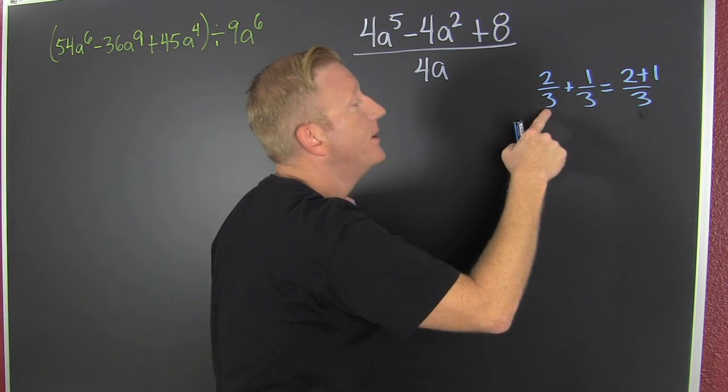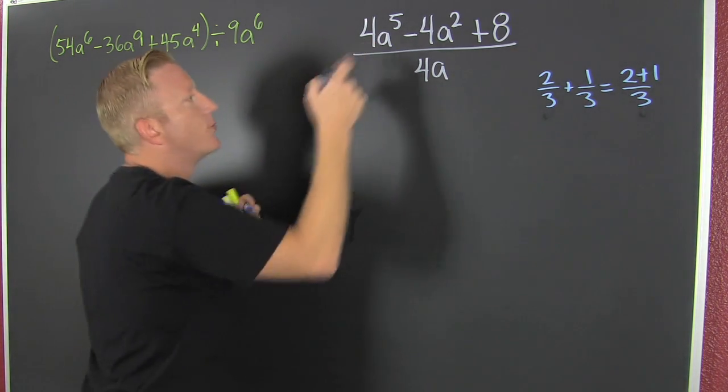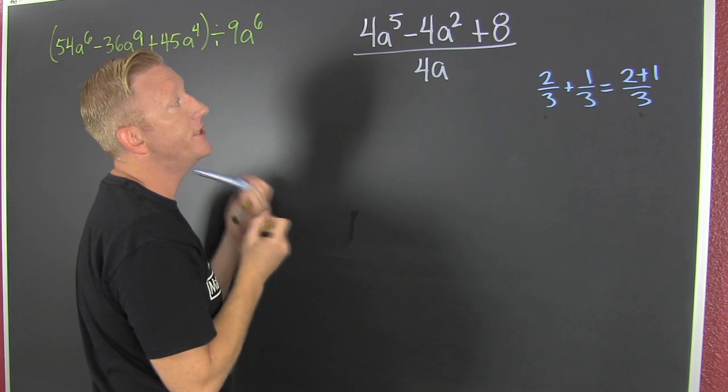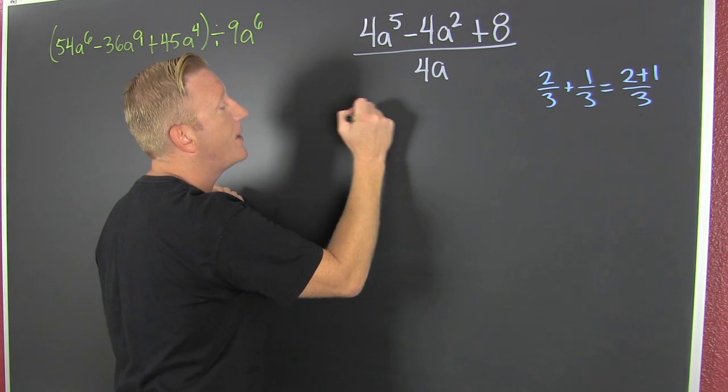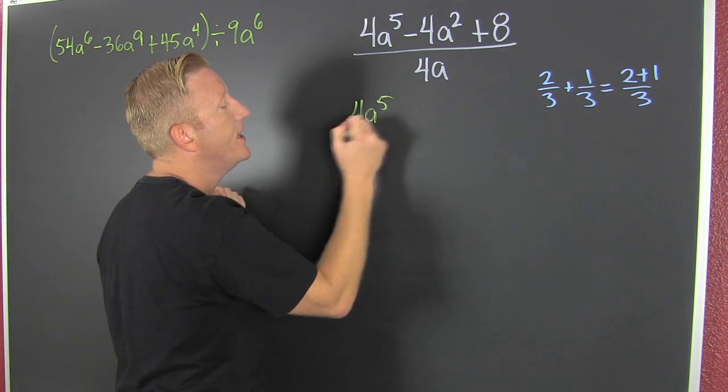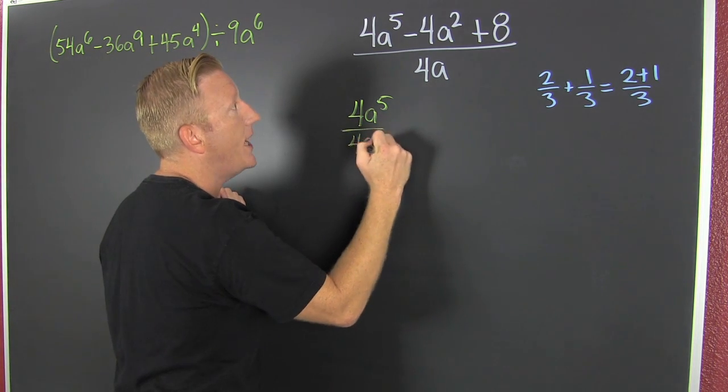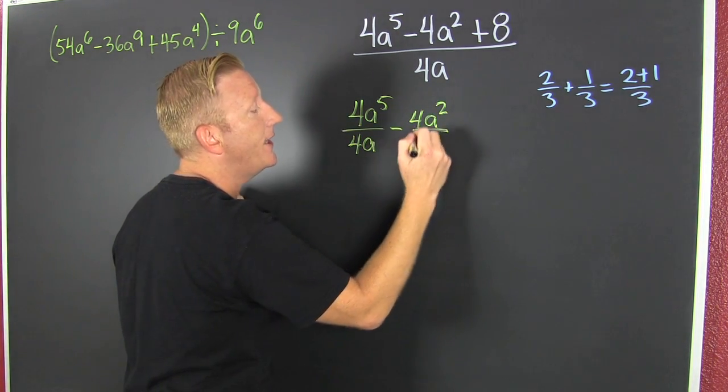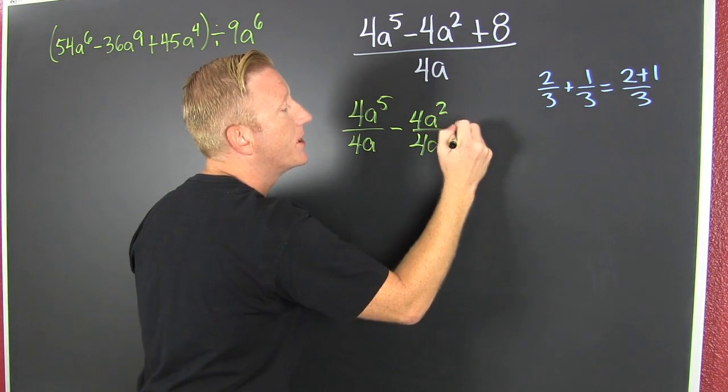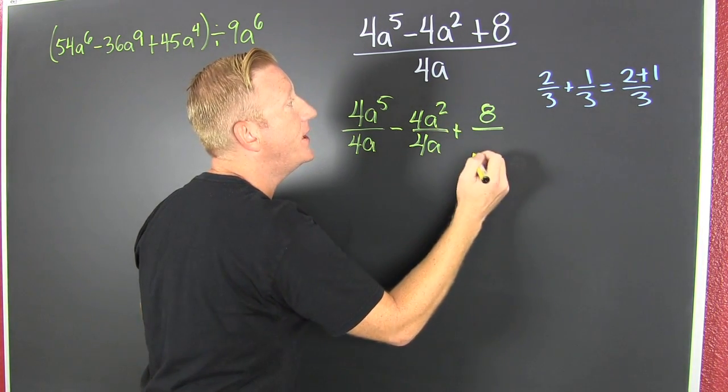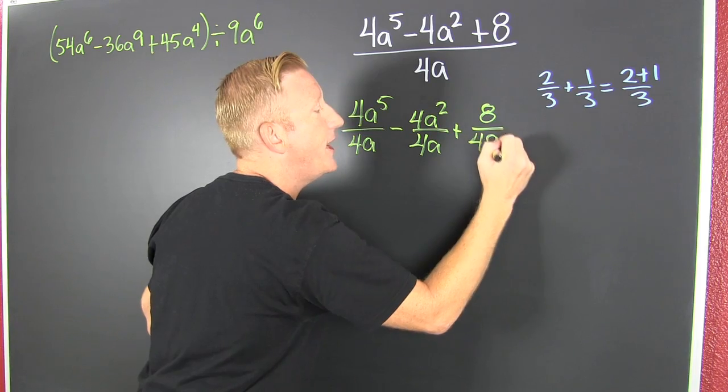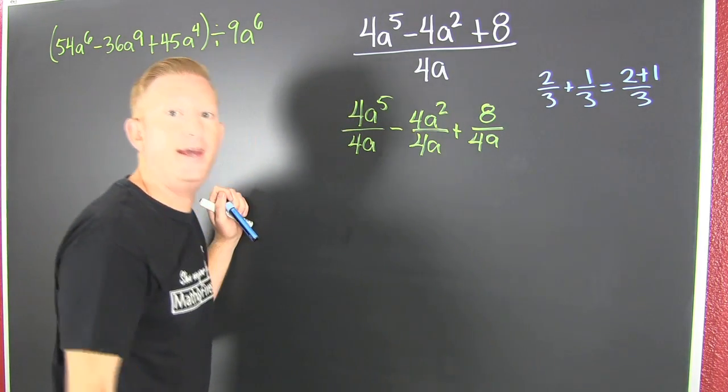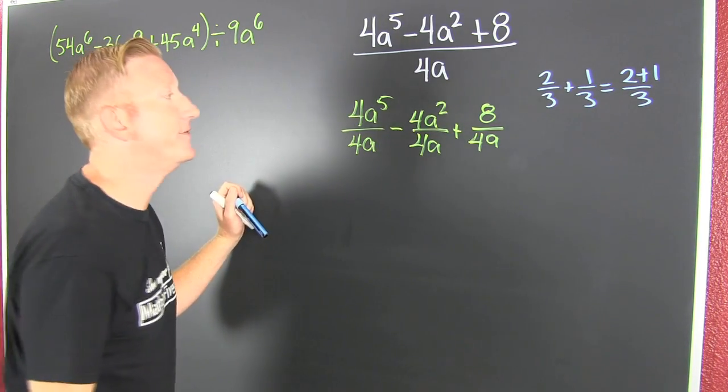If I have that right side, I can rewrite it on that left side, and that's what I decide to do over here. So I'm going to have 4a to the 5th divided by 4a minus 4a squared divided by 4a plus 8 over 4a. And then we can go and we can reduce all of those.